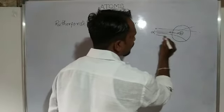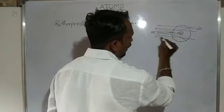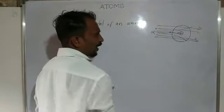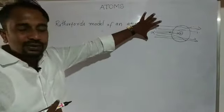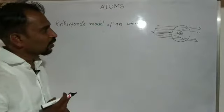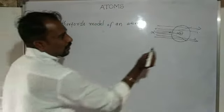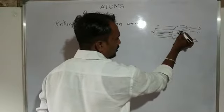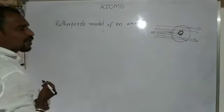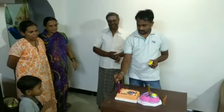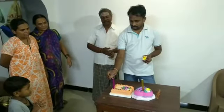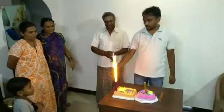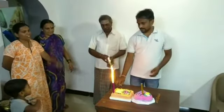Most of the alpha particles travel along a straight line. The nucleus is the center part of the atom.